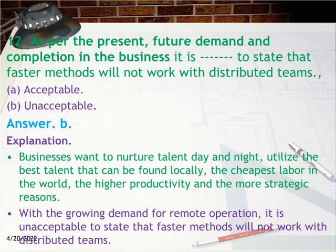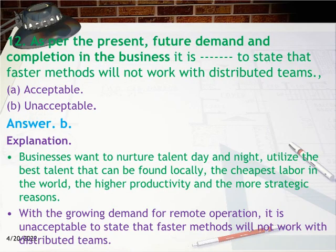Question 12: As per the present and future demand and competition in business, it is ___ to state that faster methods will not work with distributed teams. A. Acceptable, B. Unacceptable. Answer: B. Unacceptable. Explanation: With the growing demand for remote operation, it is unacceptable to state that faster methods will not work with distributed teams.